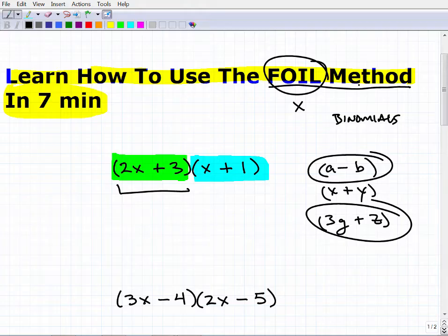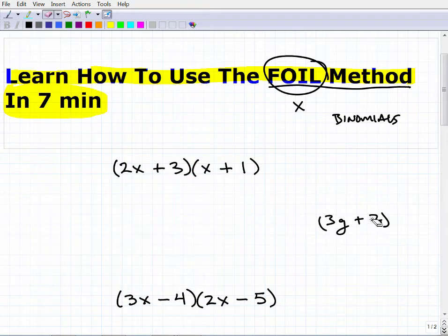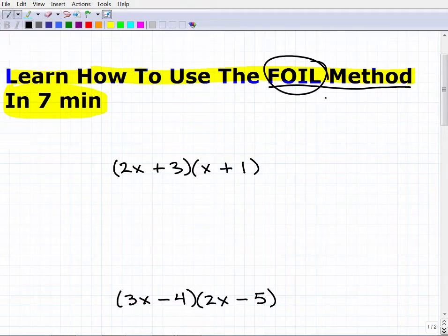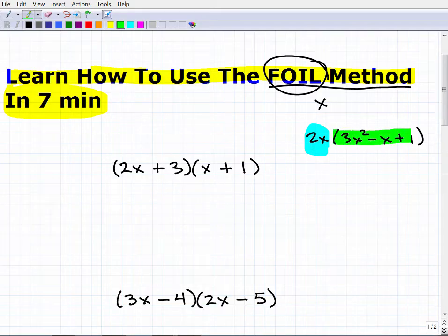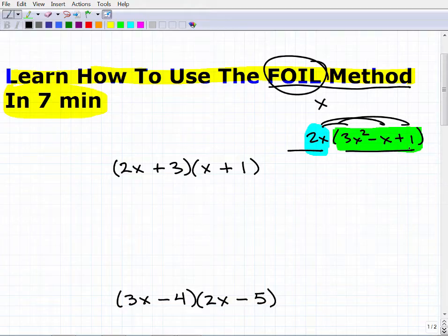Now, when you're studying algebra, you need to understand how to multiply polynomials in general. So you could have things like this, 2x times 3x squared minus x plus 1. Now this scenario, this is what we call a monomial because it only has one term, and we're multiplying it by a trinomial. So in this scenario, we would not use the FOIL method. Remember, the FOIL method only applies to a binomial times a binomial. So here we'd use the distributive property. And then if I had a binomial times a trinomial, there's other methods that you need to learn. But the FOIL method is a very popular method.